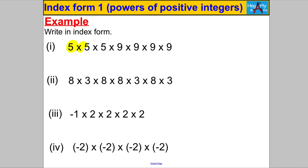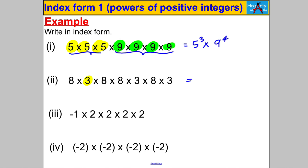Now write the following in index form when there are two different bases. We've got 5 multiplied by itself 3 times and also 9 multiplied by itself 4 times — keep the bases separate: that's 5 cubed multiplied by 9 to the power of 4. Similarly, 3×3×3 and 8×8×8×8 — keeping them separate and writing the smaller base first — gives 3 cubed multiplied by 8 to the power of 4.